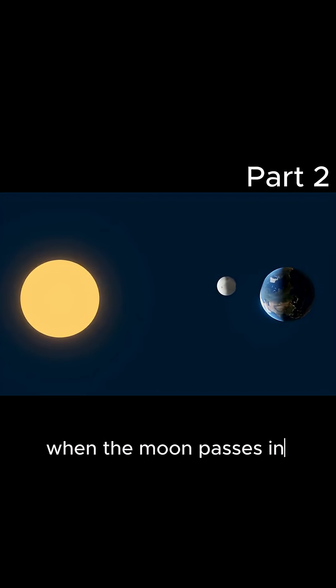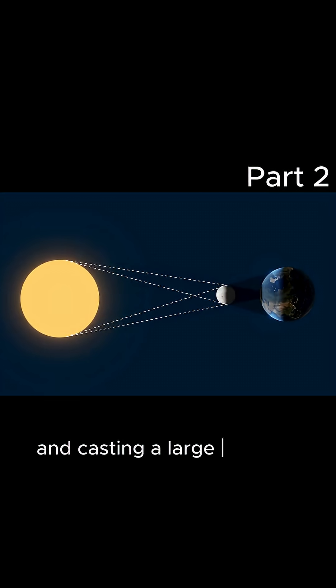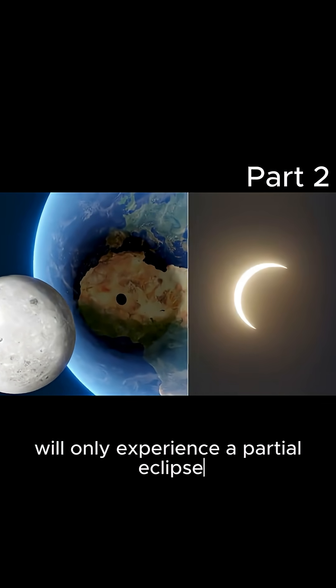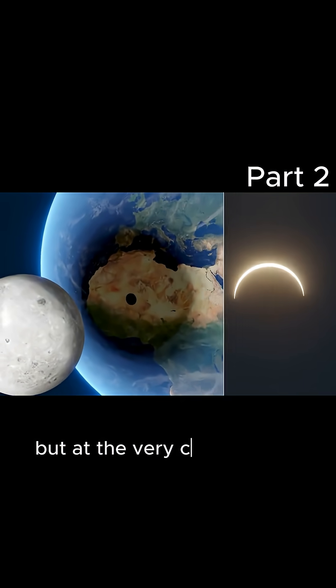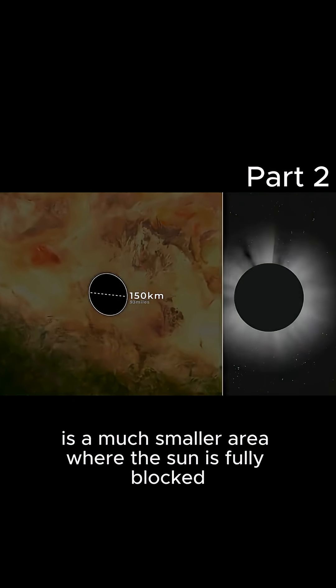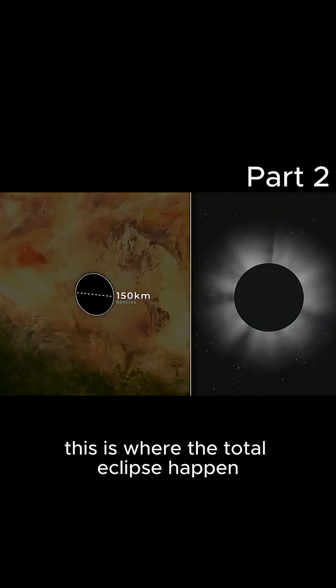An eclipse happens when the Moon passes in front of our view of the Sun, blocking out its light and casting a large shadow over Earth. Most parts of the shadow will only experience a partial eclipse. But at the very center of the shadow is a much smaller area where the Sun is fully blocked. This is where the total eclipse happens.